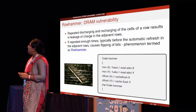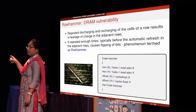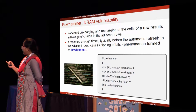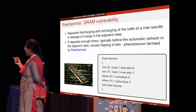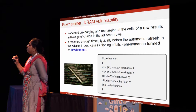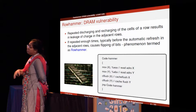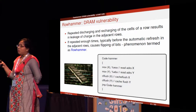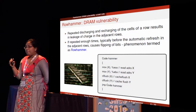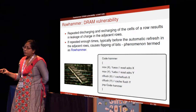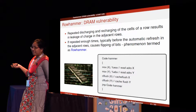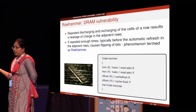Next we go to RowHammer. There is a small code segment from the original paper published at ISCA 2014. It says: read address X, read address Y, then clflush address X and Y so they are removed from cache, ensuring both accesses are made from DRAM, and repeat. If X and Y go to different rows of the same bank in DRAM, adjacent cells of those rows may lose charge with high probability, causing bit flips in adjacent rows. This is a naive example of how RowHammer can be inflicted.